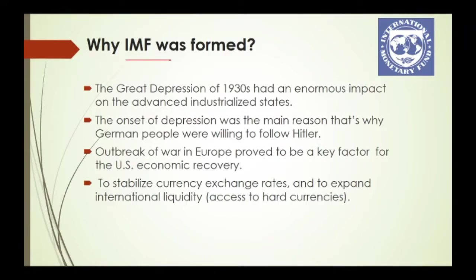Why was IMF formed? The Great Depression of the 1930s had an enormous impact on industrialized states — unemployment skyrocketed, agricultural prices fell, banks closed and declared bankruptcy, factories stood idle, and international trade collapsed. This depressive era was the main reason people were willing to follow Hitler, and these factors led to World War Two. World leaders met at Bretton Woods and agreed on a framework to stabilize the world economy and prevent such events from happening again.